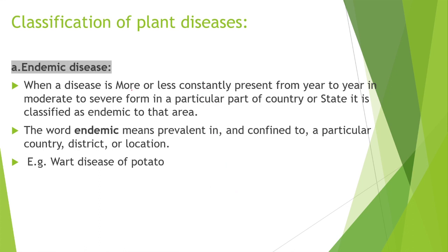First is endemic disease: when a disease is more or less constantly present from year to year in moderate to severe form in a particular part of a country or state, it is classified as endemic to that area. Endemic means related to a particular country, district, or location.